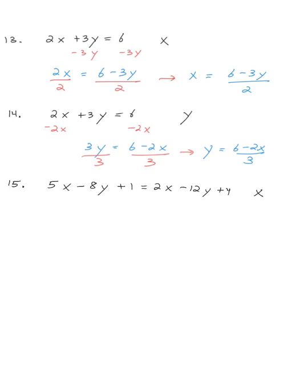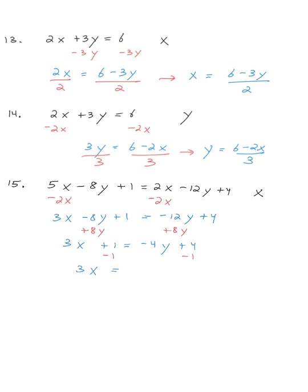We are now solving for x. I'll move the x terms to the left and everything else to the right. Subtracting 2x from both sides, I get 3x minus 8y plus 1 equals negative 12y plus 4. Adding 8y: 3x plus 1 equals negative 4y plus 4. Subtracting 1: 3x equals negative 4y plus 3. Dividing both sides by 3, my answer is x equals negative 4y plus 3 over 3.